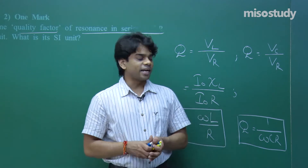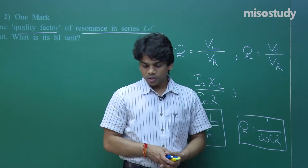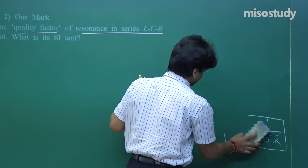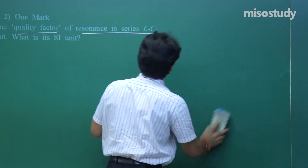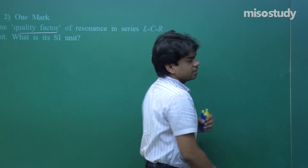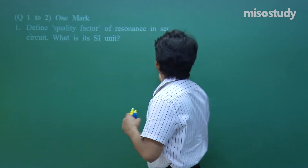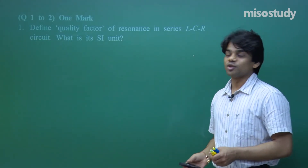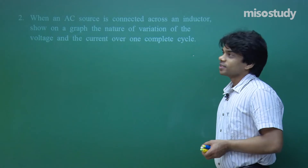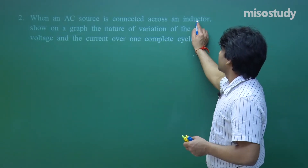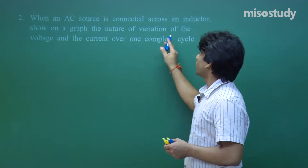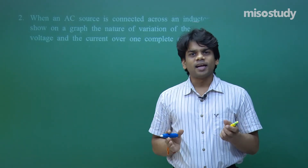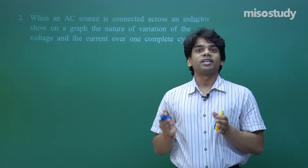You can easily write that in this form as well. This was an easy question — if you have seen all the theoretical lessons, you can certainly arrive at this solution. The next question: when an AC source is connected across an inductor, show on a graph the nature of variation of the voltage and the current over one complete cycle.